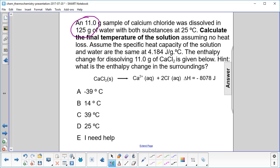Calculate the final temperature of the solution if they start at 25 Celsius and you assume no heat loss. We have the specific heat capacity here, and then we have the enthalpy change for dissolving this calcium chloride. So that is the enthalpy change of the system.